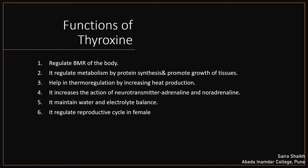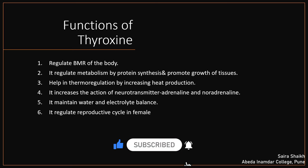Thyroxine also plays a very important role in thermoregulation — the regulation of body temperature — by increasing heat production in the body. It also increases the action of neurotransmitters. Neurotransmitters are chemical substances secreted by nerve cells that help to transmit impulses from nerve cell to nerve cell. The neurotransmitters adrenaline and noradrenaline are active in presence of thyroxine. The next function is to maintain water and electrolyte balance, controlling blood volume. Lastly, thyroxine also controls the reproductive cycle in females.